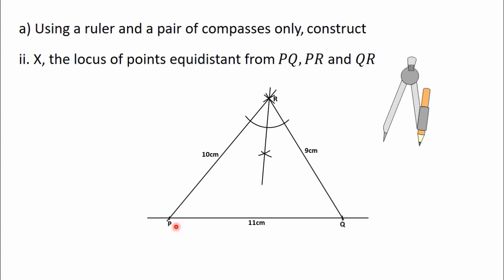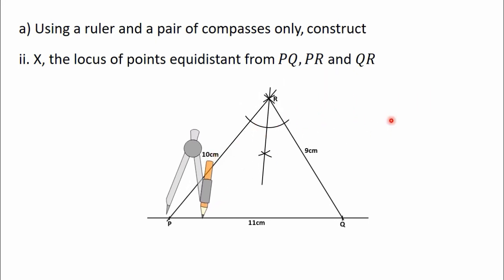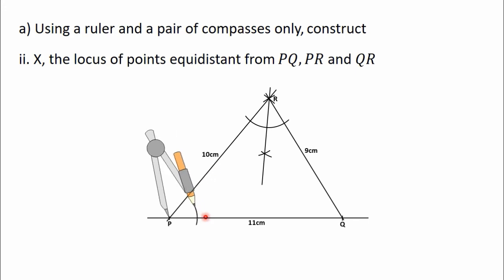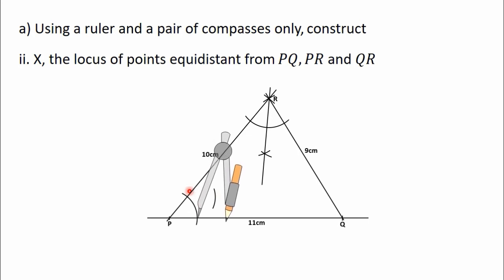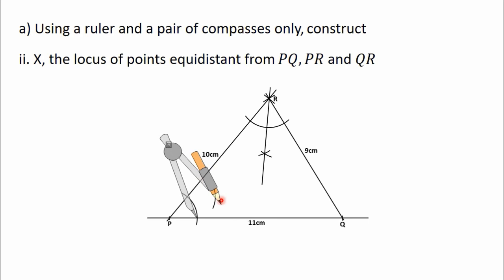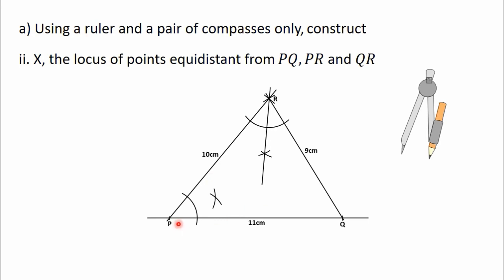Let's now bisect the angle formed at point P. Put the needle of the compass on point P, adjust it, and construct an arc to intersect the line PQ and the line PR. Then move the needle to the intersection point on the line PR and construct an arc. With the same radius, move the needle to the other intersection point and construct another arc. Draw a straight line from the intersection of the two arcs to point P — this bisects the angle at P.